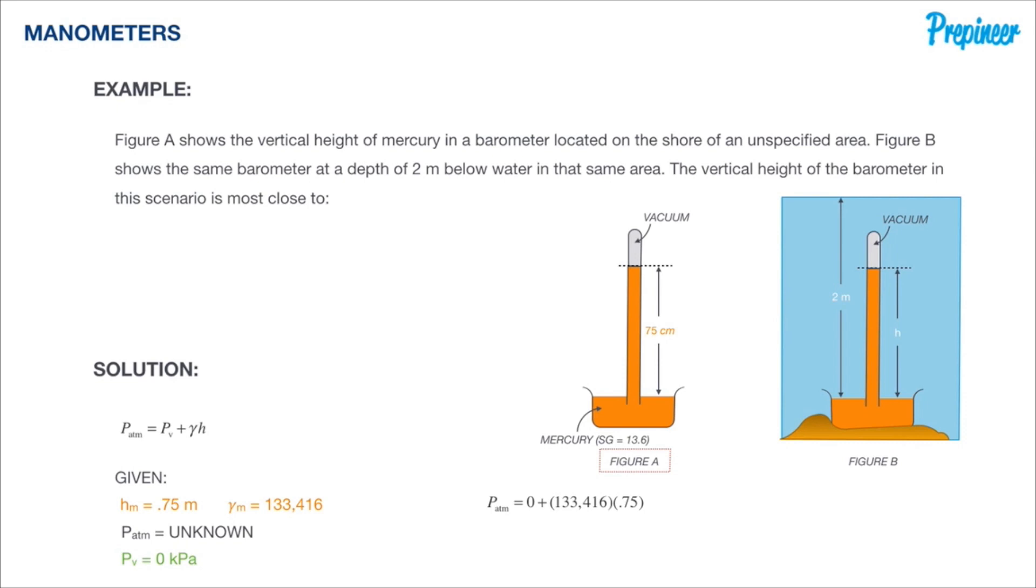So plugging this into our general formula, we have a formula as you see right there below Figure A, and we find that atmospheric pressure is 100,062 Pa. So it's actually a little bit lower than atmospheric pressure, but this is definitely a piece of information that we needed to determine what the height of that mercury would be in our second scenario.